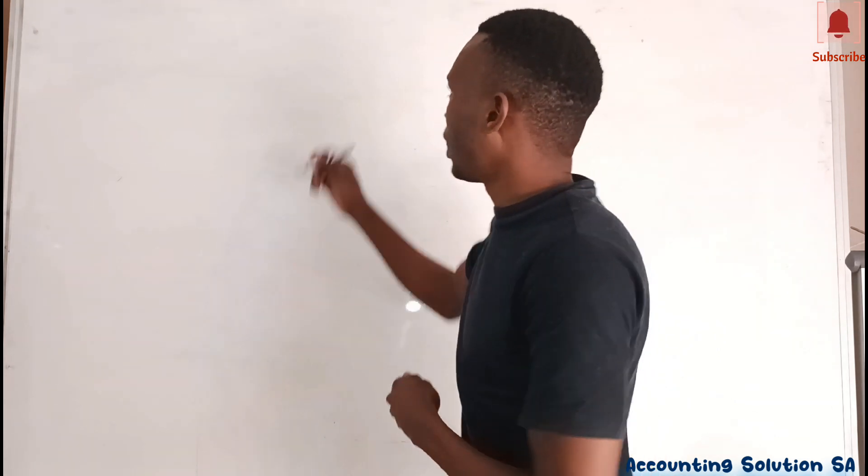Hi everyone. In this video I just want to explain the basics of accounting when it comes to debit and credit. After this video you are going to understand and have a clear picture of the accounting equation, general ledger, ledger account, and how the balance sheet and income statement work.